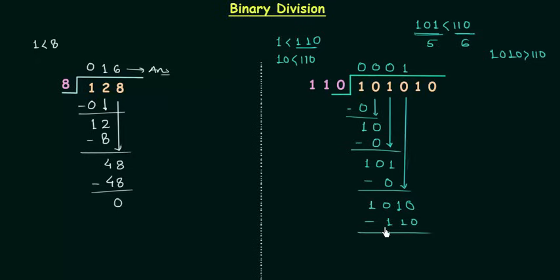To find out remainder we will perform subtraction. 0 minus 0 is 0, 1 minus 1 is 0. 0 minus 1 we have to take the borrow and we have 2 here. 2 minus 1 is 1 and as we have taken the borrow from this position we have 0.